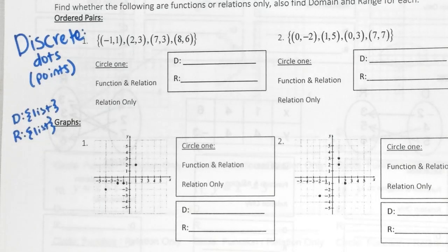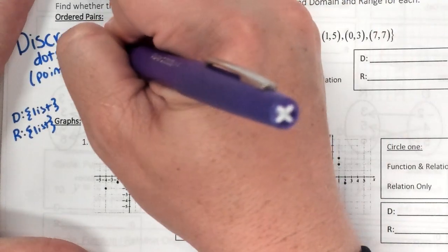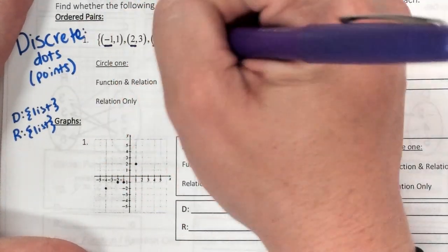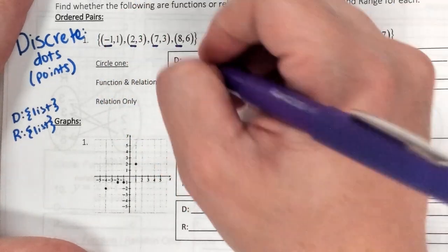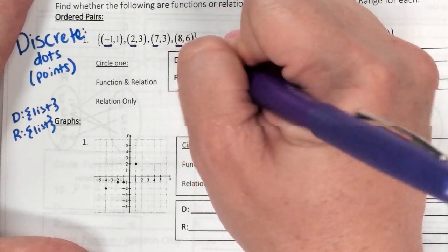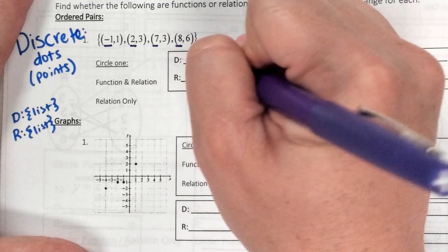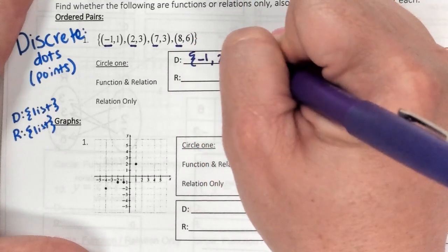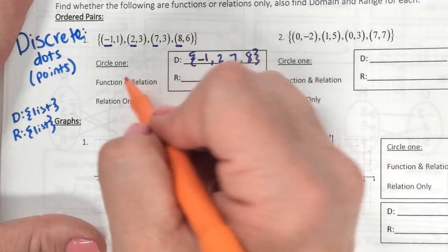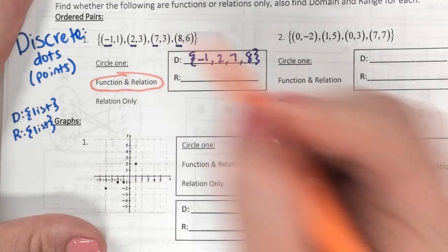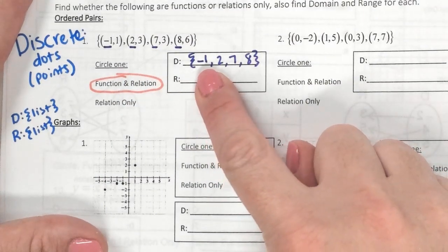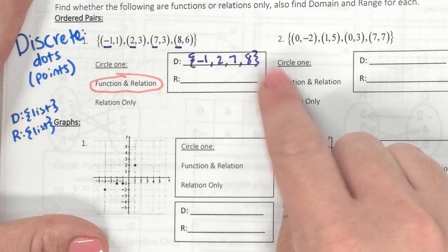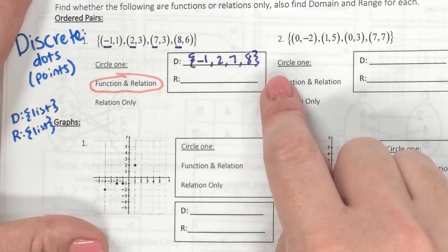Looking at number one, we're looking at X for domain. The X values are the first numbers: negative 1, 2, 7, 8. Did X repeat? No — they were all their own number, therefore this is a function. And this is what I mean by a list: negative 1, comma 2, comma 7, comma 8, because those are all my possible X values.